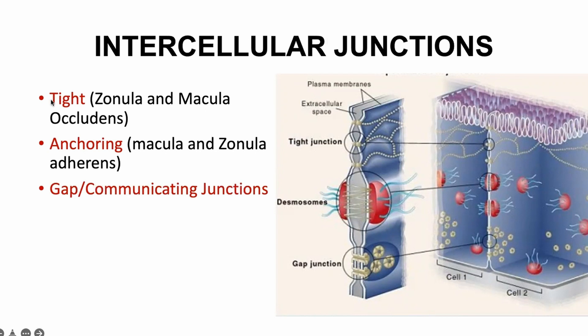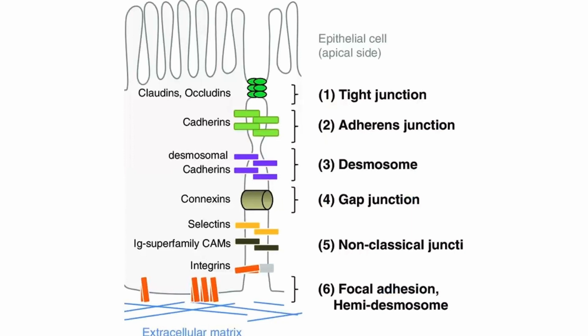Know this diagram. The tight junction — zonula occludens — is at the apical surface and holds the cells together tightly, not allowing anything to pass through. Communication takes place at the gap junction, not the tight junction. I put this diagram many times in my slides deliberately, because repetition is literally the only way you learn. You won't learn it from hearing me say it — you'll learn it from repeating it yourself. The primary exposure will make it easier, but the hard work has to be done by you.